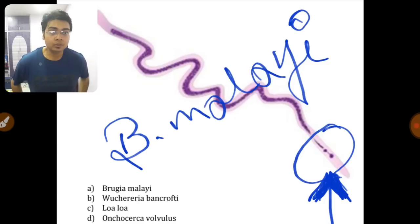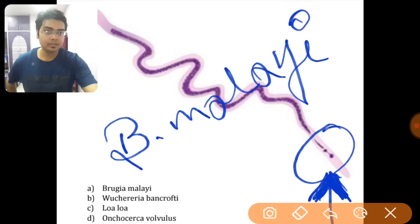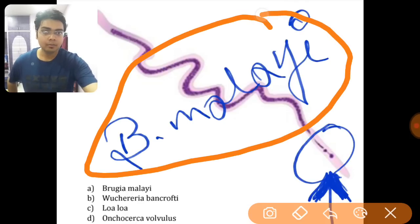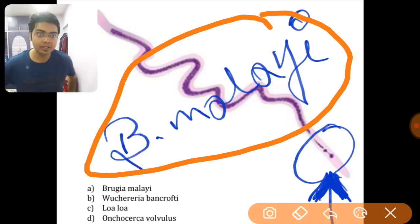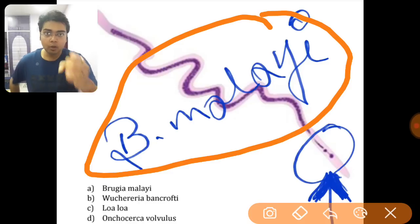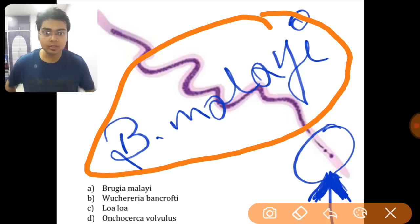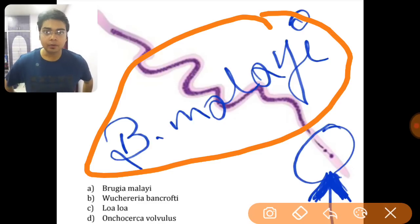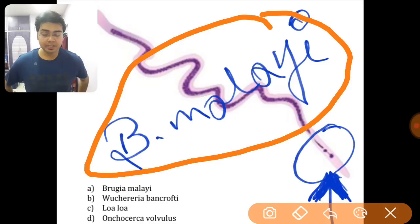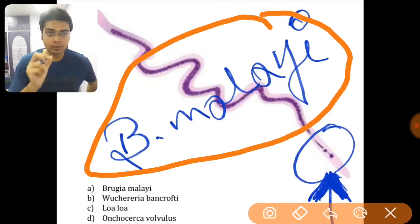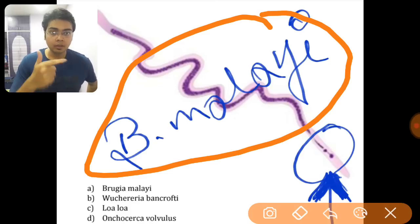Can you tell me in this picture what structure this is? Yes, it is Brugia malayi — but it won't be written in your examination. So how will you identify and differentiate it from the options: Brugia malayi, Wuchereria bancrofti, Loa loa, and Onchocerca volvulus? I'll tell you two important differentiating factors. At the tail, Brugia malayi has two distinct, separated nuclei — this is the characteristic feature of this organism.